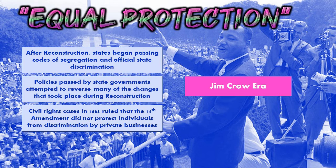In some civil rights cases in the 1880s, what the court ruled is that the 14th Amendment, which requires equal protection of the law, did not prevent businesses from discriminating. This left any private business with the ability to discriminate in any way it wanted. So we end up with systems where businesses would only serve white customers and things like that.